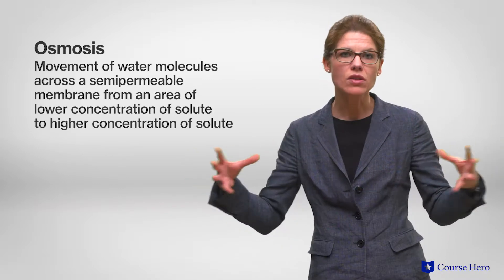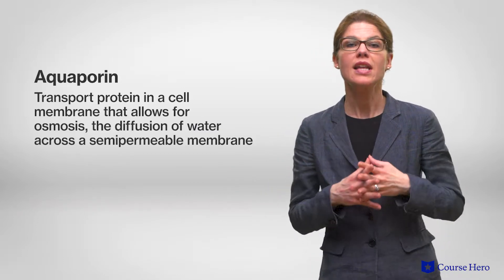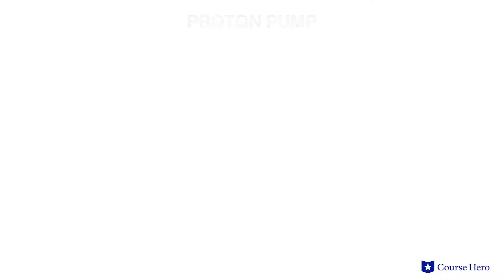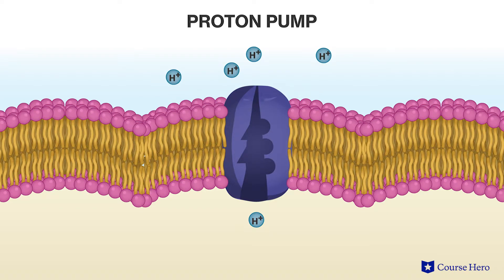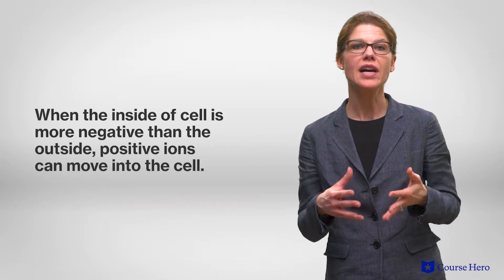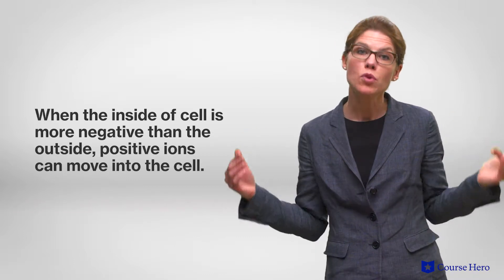The difference in solute concentration between the inside and the outside of the roots results in water moving into the root by osmosis. There are special channel proteins called aquaporins that help facilitate the movement of water and ions across the cell membrane. Plants also use a proton pump that uses energy from ATP to move protons out of the cell against their gradient. This action forms electrical and proton gradients, and with the inside of the cell now being more negative than the outside, positive ions such as potassium can move into the cell.